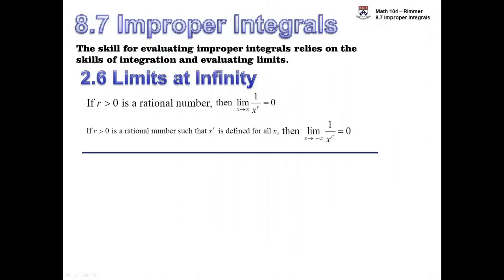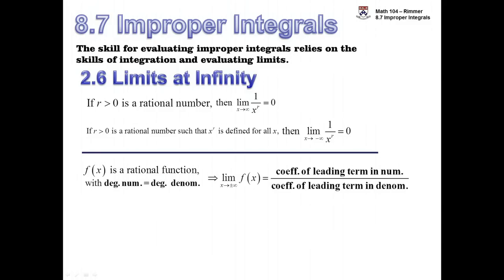And then we also saw that if you have a rational function that you're integrating, a numerator and denominator both being polynomials, then you can look at the degree of the numerator versus the degree of the denominator. If they're equal to each other, then you can say that the limit will be the leading coefficient of the leading term in the numerator divided by the coefficient of the leading term in the denominator.